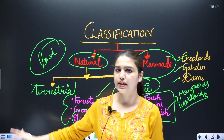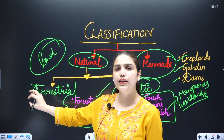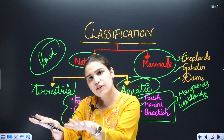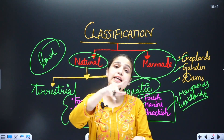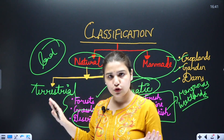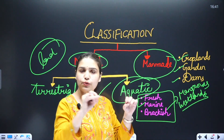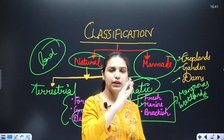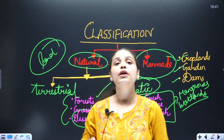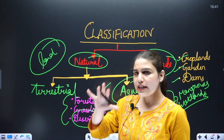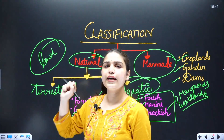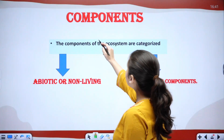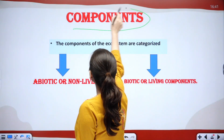To summarize the classification: we have terrestrial ecosystems, associated with all land ecosystems — different forests, grasslands, and deserts — and aquatic ecosystems, related to water sources, including freshwater, brackish water, and marine water ecosystems.